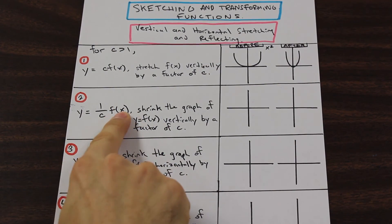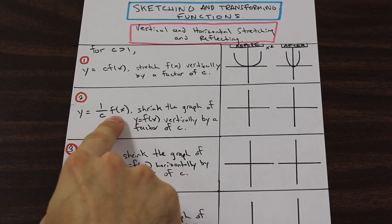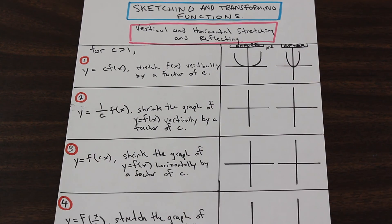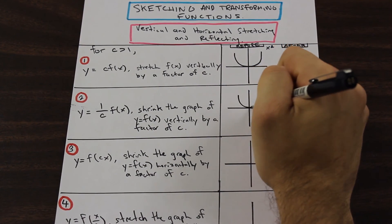Now we're multiplying the function by a small number, right? 1 over something. So f of x is getting smaller, so y is getting smaller. So what's going to happen? Well, it's going to be the opposite of this. So let's use x squared again as our example. We're going to have x squared here.